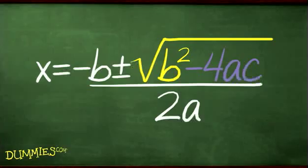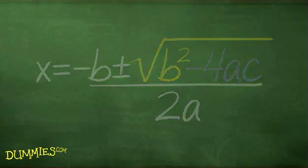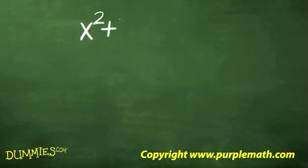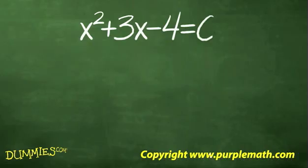Some sign errors can occur if you're not careful. You can apply the quadratic formula to any quadratic equation to find the solutions, but whenever the answers come out as integers or fractions, it means that the equation could be factored by using the unfoil method instead of the quadratic formula.